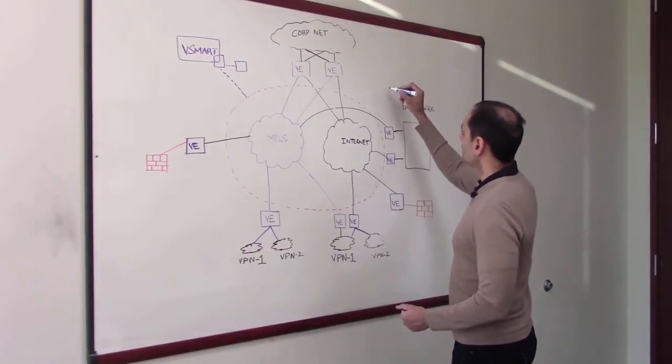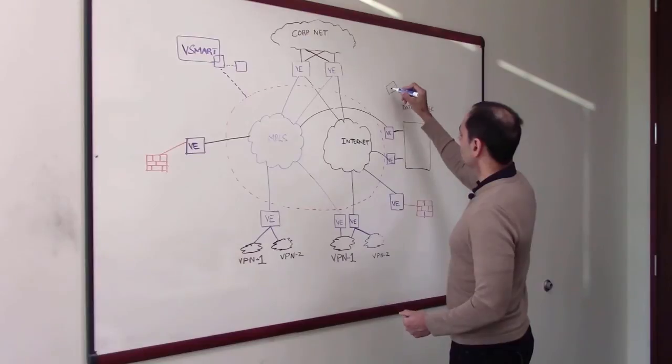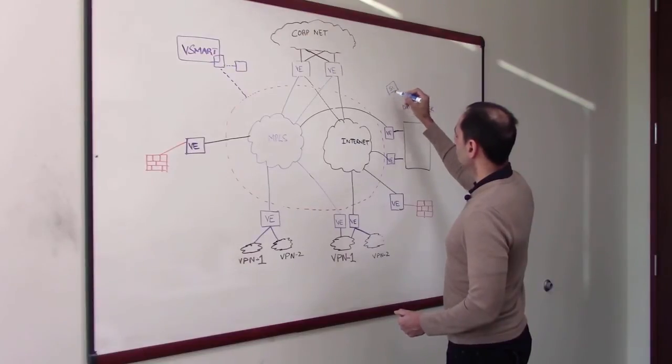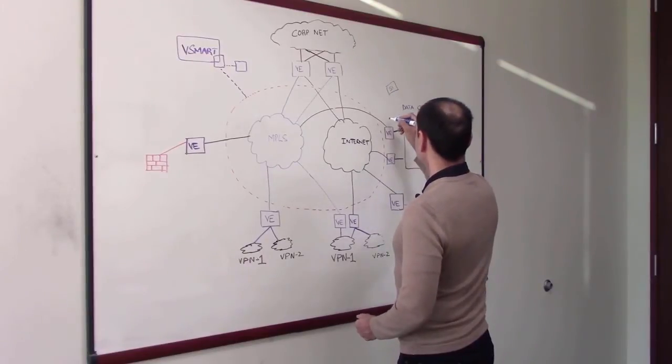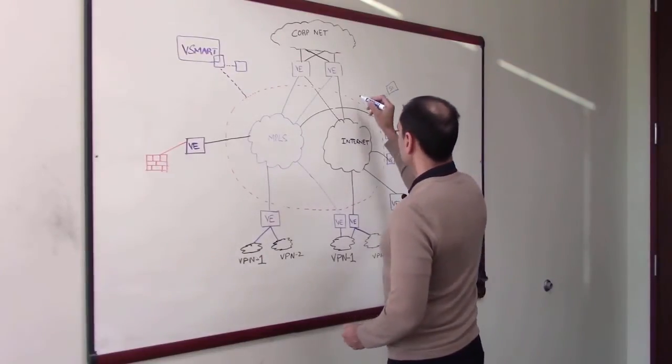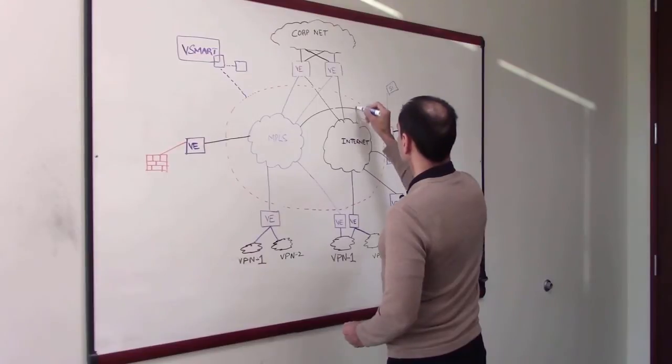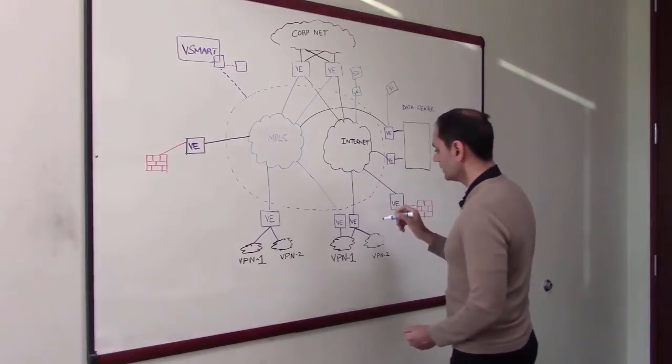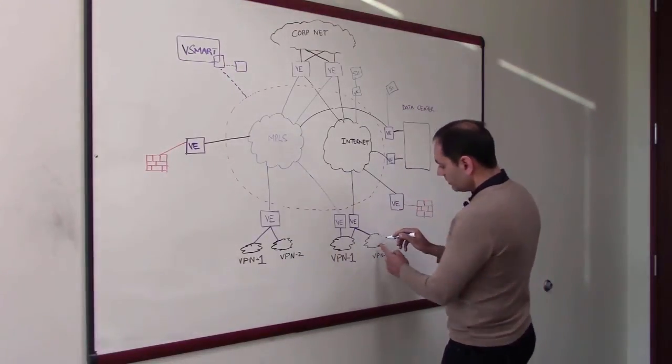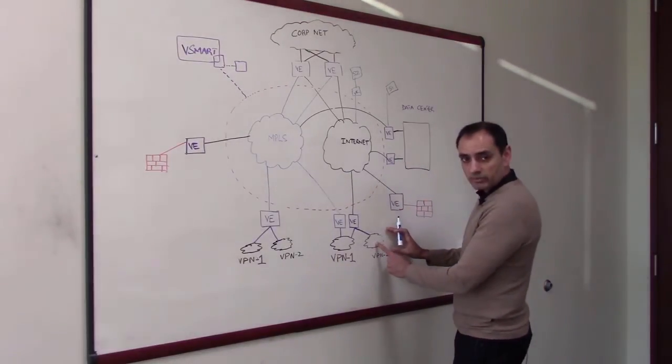Let's say you spin up service one here which is sitting at this site. You have service two which is sitting at another - this is a V edge and service two is sitting here. Within VPN, I'll give you an example of VPN2: